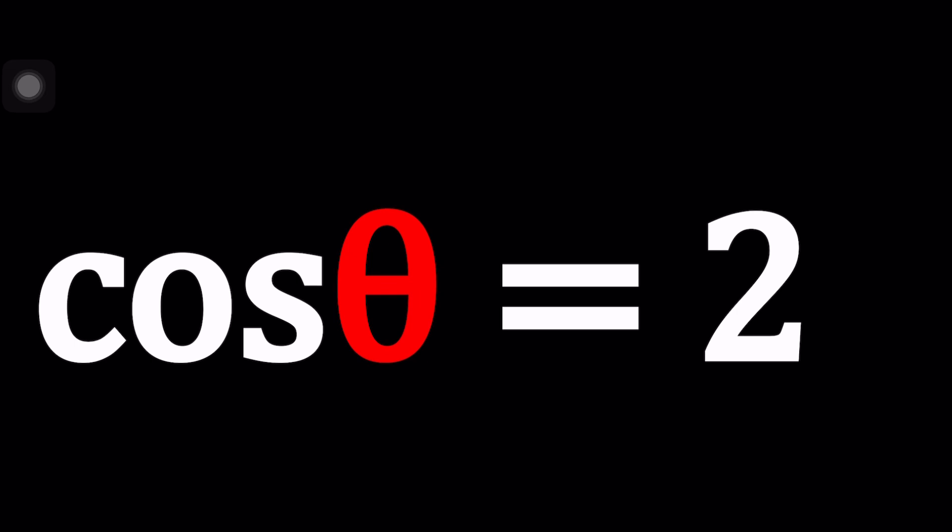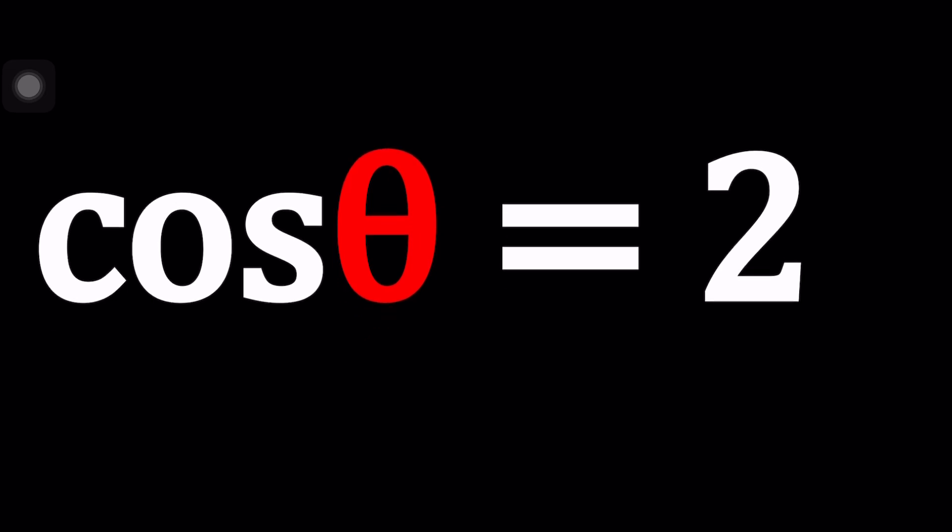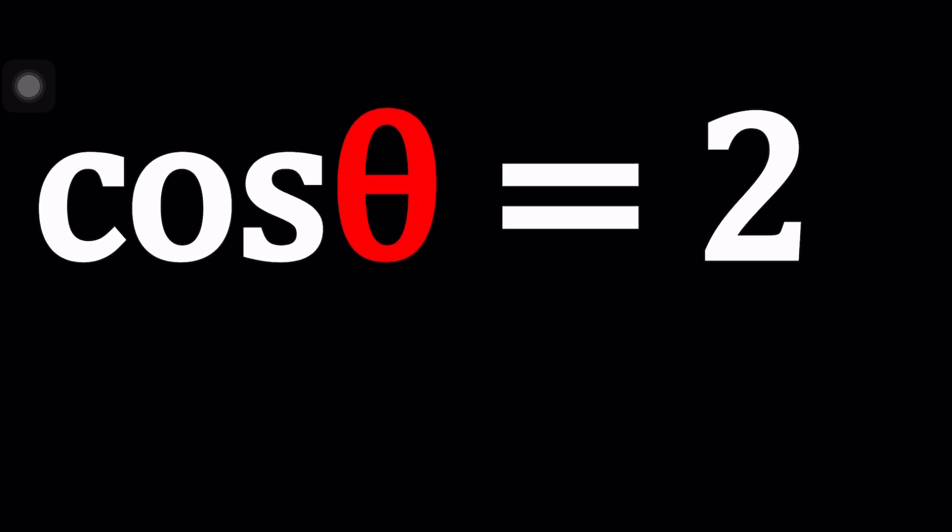First of all, when you see a problem like this, you're probably thinking about a lot of identities. One of the most important identities is based upon the Pythagorean theorem. You should definitely know this. In general, sine squared theta plus cosine squared theta is equal to one.